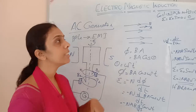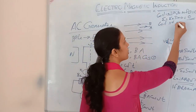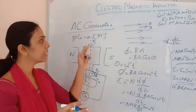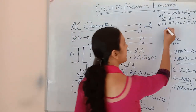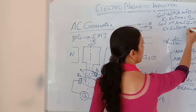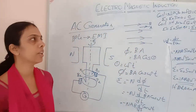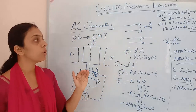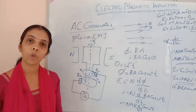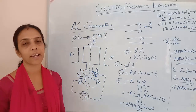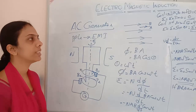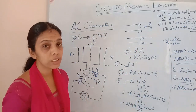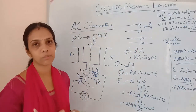When the coil is parallel to the magnetic field, θ = 90°, because the area vector is perpendicular to B. Therefore E = E₀ sin 90° = E₀, the maximum value. When θ = 180°, E = E₀ sin 180° = 0 again. When θ = 270°, E = −E₀, the maximum value in the negative direction — the current flows in the opposite direction.